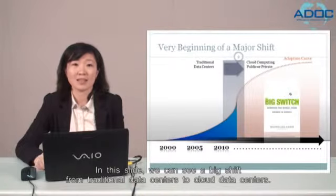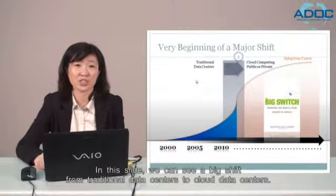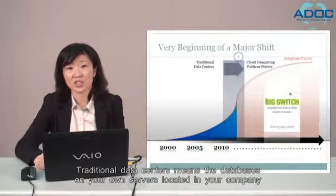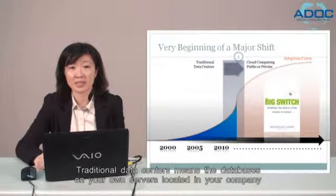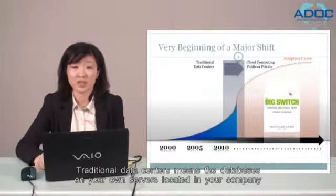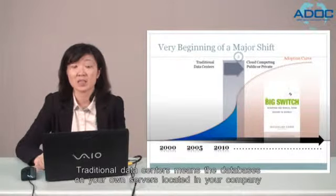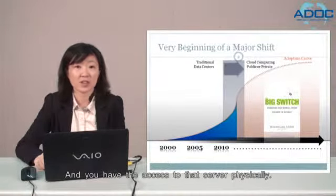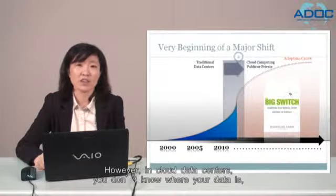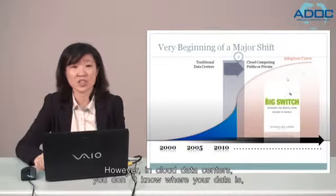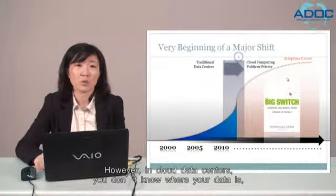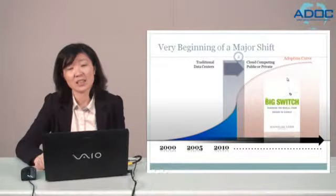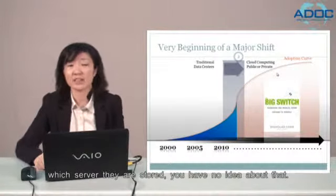In this slide, we can see a big shift from traditional data centers to cloud data centers. Traditional data centers means databases on your own servers located in your company or somewhere you know, and you have physical access to that server. However, in cloud data centers, you don't know where your data is, which server they are stored on. You have no idea about that.